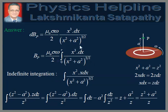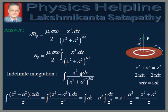We will first evaluate this indefinite integral. We write x³ = x² × x dx, divided by (x² + a²)^(3/2). We make the substitution x² + a² = z². Differentiating, 2x dx = 2z dz, so x dx = z dz. Substituting: x² = z² − a², x dx = z dz, and (x² + a²)^(3/2) = z³. We get (z² − a²) × z dz / z³.